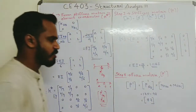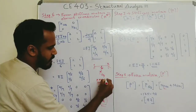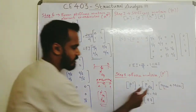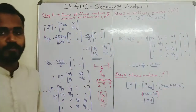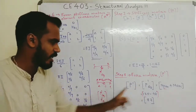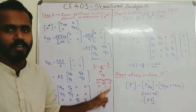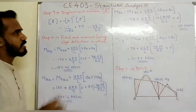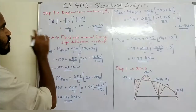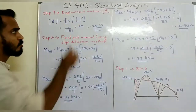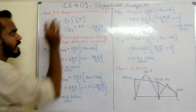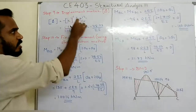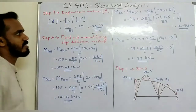The force matrix P-dash: P-dash(θB) = MFBA + MFBC. MFBA = 135 and MFBC = −48, so 135 − 48 = 87. Therefore the P-dash matrix equals 87. The displacement matrix delta = −K⁻¹ × P-dash = −1/(1.11EI) × 87 = −78.37/EI.